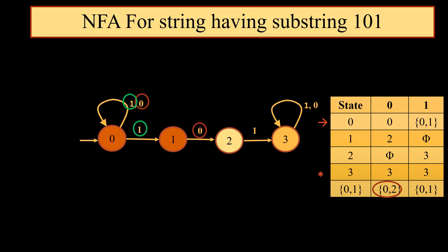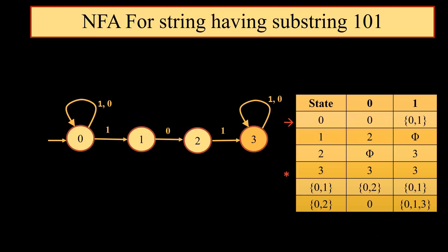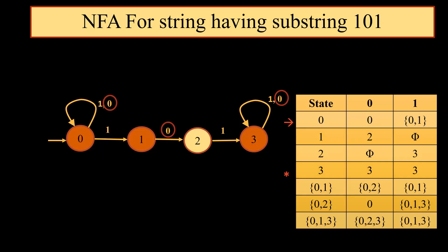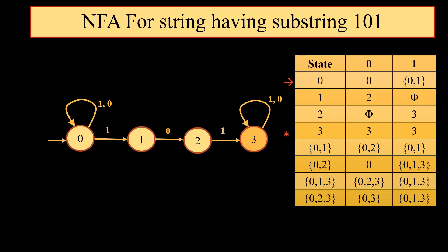So the new state which has been generated is {0, 2}. We will add that state to the table. Corresponding to input 0 we get output {0} and corresponding to input 1 we get output {0, 1, 3}. A new state {0, 1, 3} is added. {0, 1, 3} on 0 gives us {0, 2, 3} and {0, 1, 3} on 1 gives us {0, 1, 3}. Now we have one more new state {0, 2, 3}; we will add this state also to the table.